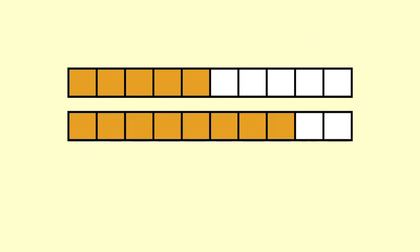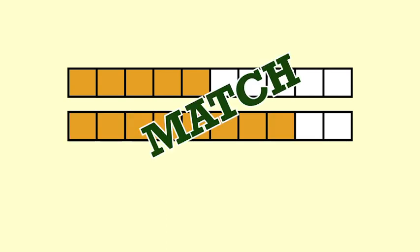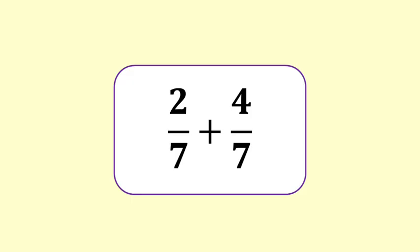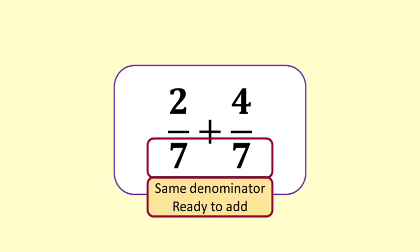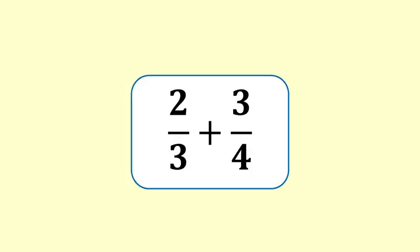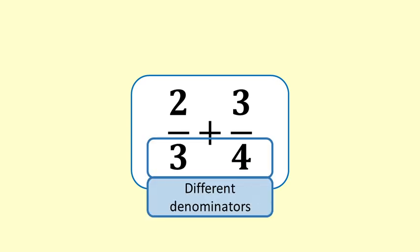The answer will also have that denominator. 2 sevenths and 4 sevenths have the same denominator — they are ready to be added. 2 thirds and 3 quarters do not have the same denominator; we cannot add them as they are, they will need to be prepared.